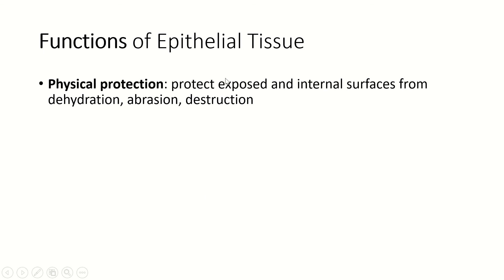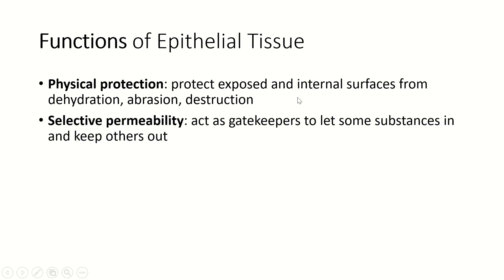Functions of epithelial tissue: primarily physical protection — to protect exposed surfaces from dehydration, from abrasion, from destruction — but also to hold things in place and protect organs from movement within the body and movement by things around the body.